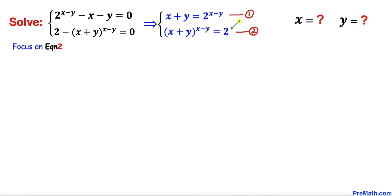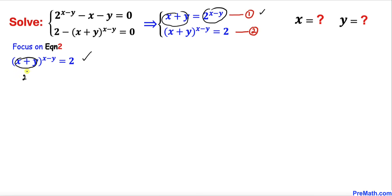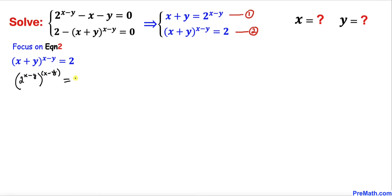Now let's focus on equation two. Here I have copied it down. Let's focus on the base x + y. We can see from equation one that x + y = 2^(x−y). So I am going to replace x + y in equation two with 2^(x−y), giving us (2^(x−y))^(x−y) = 2.